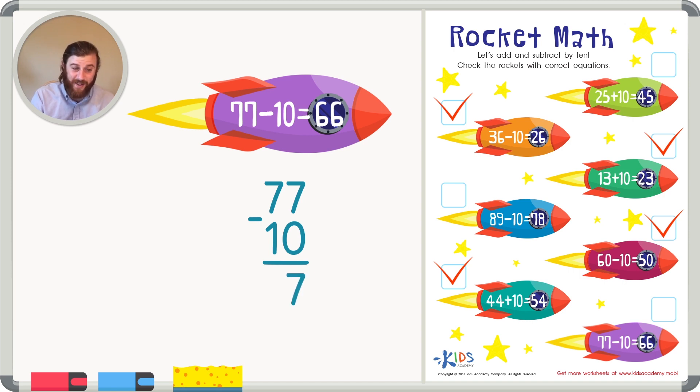7 minus 0 is 7 because you're taking nothing away. And 7 minus 1 is 6. So it gives us an answer of 67. Although the numbers are close, they are not the same. So this number sentence is not correct.